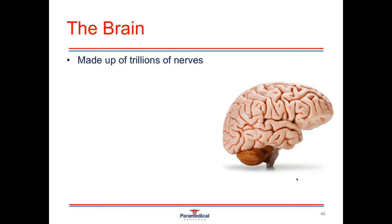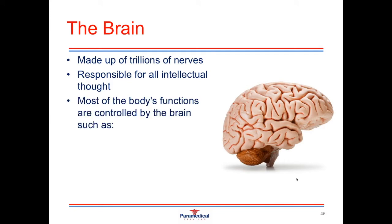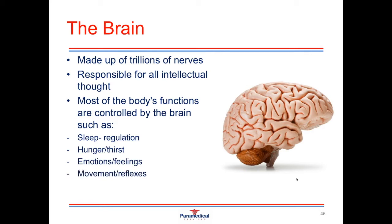Overall, the brain is made up of trillions of different nerve cells and is responsible for all intellectual thought. Most of the body's functions are controlled by the brain, including sleep regulation, hunger and thirst, emotions and feelings, movements and reflexes, and receiving sensory input from our five senses.